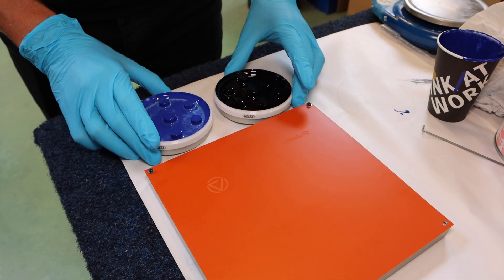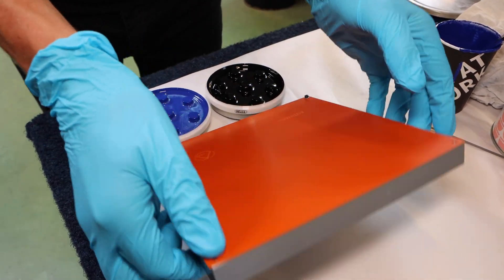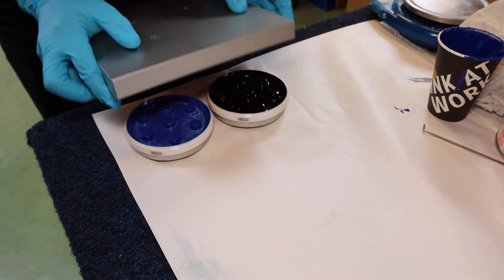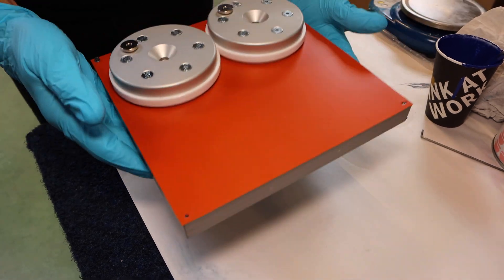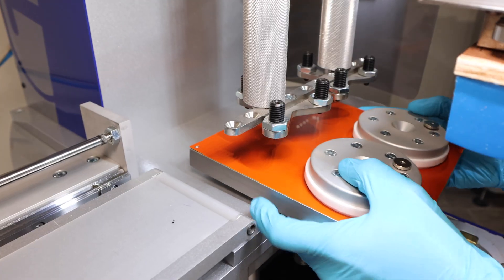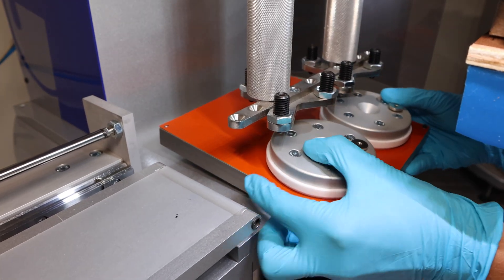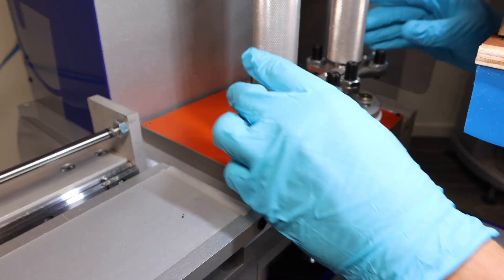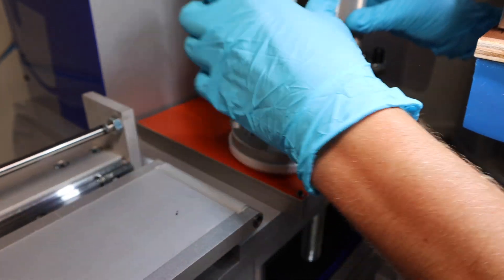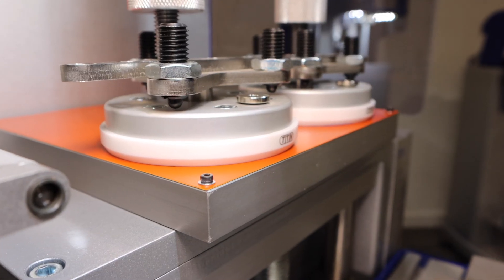Place the ink cups into the plate by flipping the plate over, having the magnetic ink cups stick to the plate. Place the ink cups and base plate on the machine, securing it with the downward pressure rods. That's it, let's print.